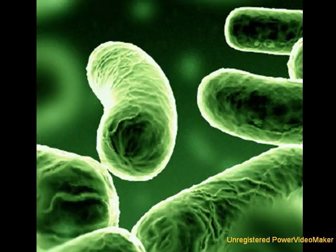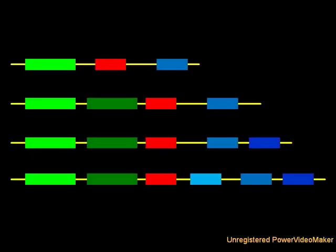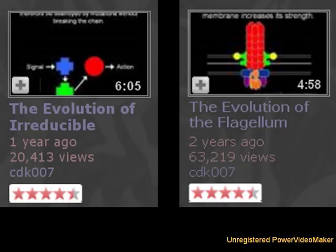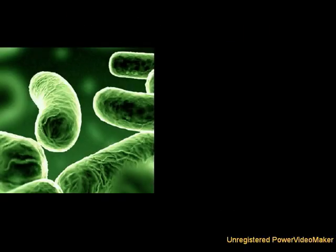We see these today in the simplest bacteria, which evolved long before sexual reproduction. And while evidence suggests the vast majority of genes evolved from pre-existing genes through duplication and mutation, a recent study in the peer-reviewed journal PLOS demonstrates that novel enzymes can evolve from completely random sequences in only a few generations. To learn more about the evolution of irreducibly complex systems, please watch the evolution of irreducible complexity and the evolution of the flagellum.